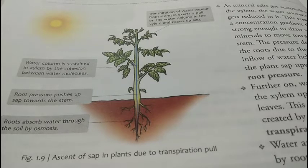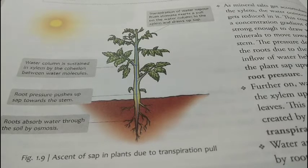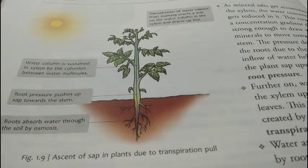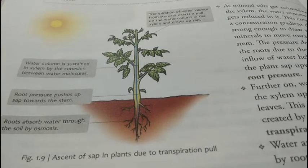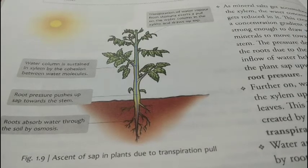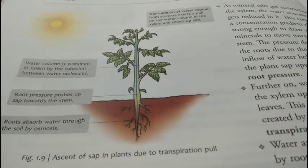यह root pressure ही है जिसके वजह से water और minerals cell to cell move करता हुआ xylem तक पहुंचता है। Further, water moves through the xylem up the stem and then to the leaves. This happens due to the pull created by transpiration — it is called transpirational pull.